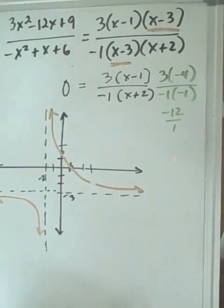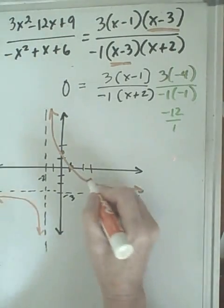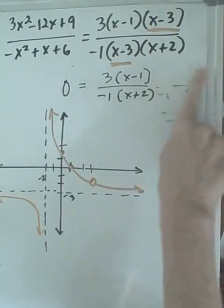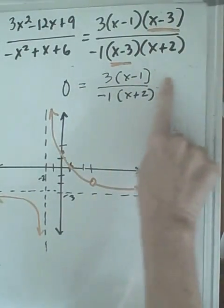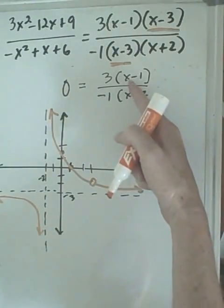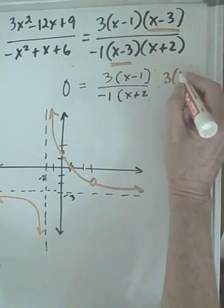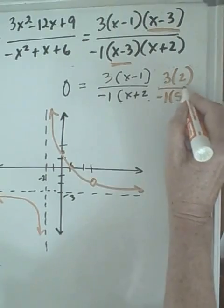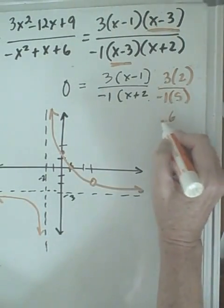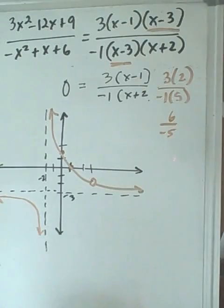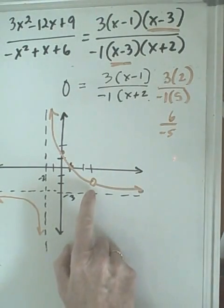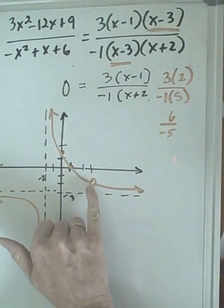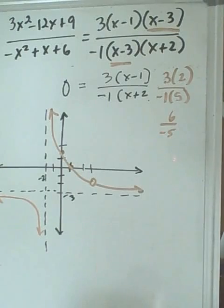And if we needed the exact value for positive 3, we would once again go back to our equation, plug in positive 3 to get our y value. Don't you just love my finger eraser? And we would get positive 3 minus 1 would be 2, and negative 1 times 3 plus 2 would be 5. So, at 6 over negative 5 would be our y value. So, this point right here would be 3, and negative 1 and 1 fifth, which it doesn't line up perfectly, but this isn't graph paper.